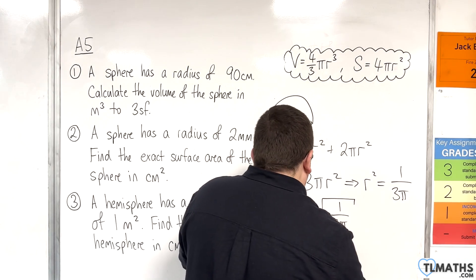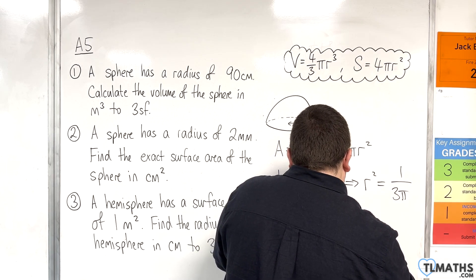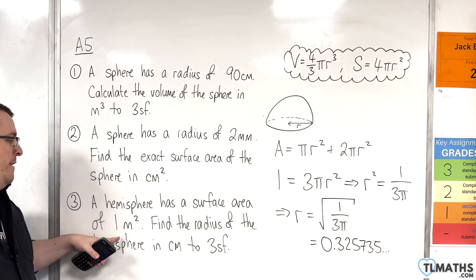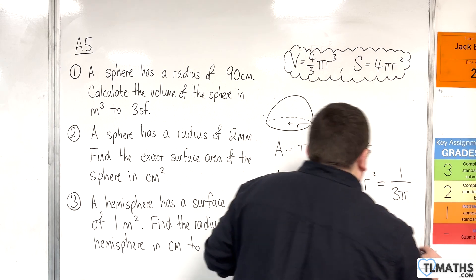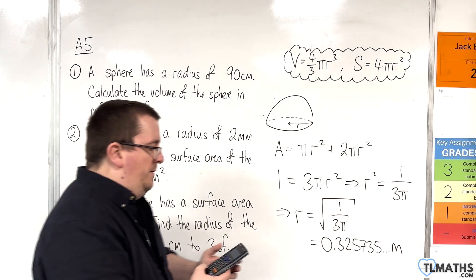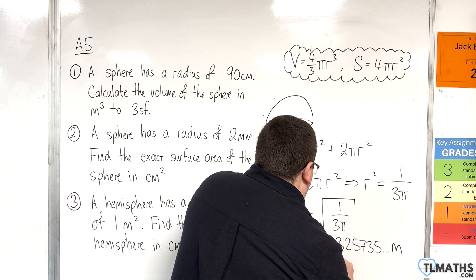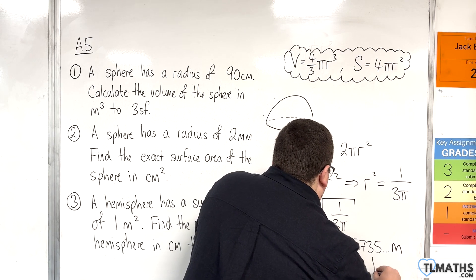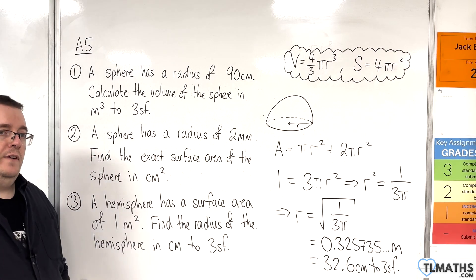Which is 0.325735, etc. Now, units wise, because my area was in square meters, this is in meters. But I want it in centimeters. So I need to multiply that by 100. And so I get 32.5735. So that's 32.6 centimeters to 3 significant figures.